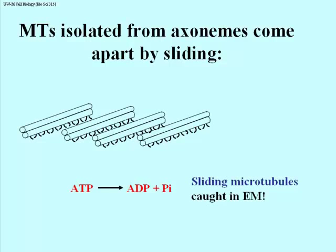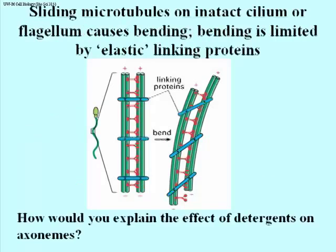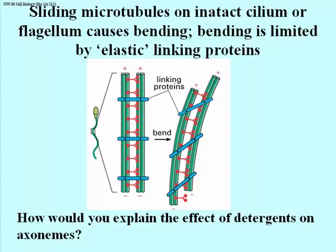Here we have just a pair of doublets with the dynein arms linking them. If you imagine one doublet moving along the other, movement is restricted by linking proteins. If the microtubule on the right is extended upwards, the effect will be to bend the entire structure. In the 9+2 array of microtubules in cilia and flagella, the beat is based on alternately walking microtubules on one side of the 9+2 or walking microtubules on the other side.